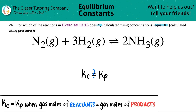How do we figure that out? The Kc equals the Kp only when the gas moles of the reactants equal the gas moles of the products. So basically, all we care about here is the gas species.